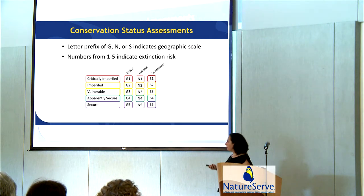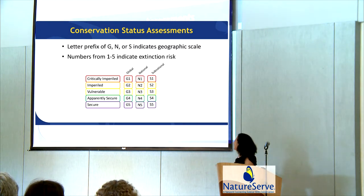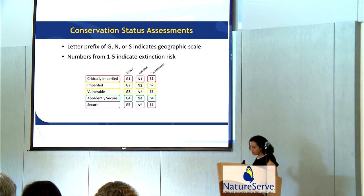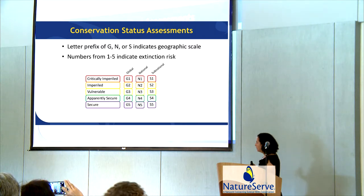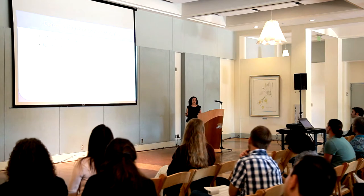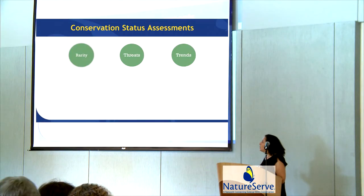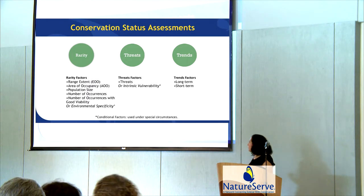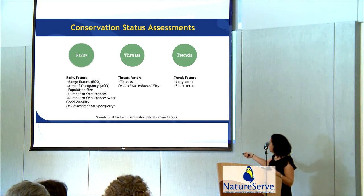There's a letter prefix of G, N, or S that indicates the geographical scale — G stands for global, N for national, and S for subnational. The numbers from 1 through 5 indicate the extinction risk, with 1 being the most critically imperiled and 5 being relatively secure. There are three components of the status assessment: rarity, threats, and trends. Among these three components there are eight rank factors and two conditional factors. The rank calculator uses a weight of evidence approach, putting in all available reliable information.